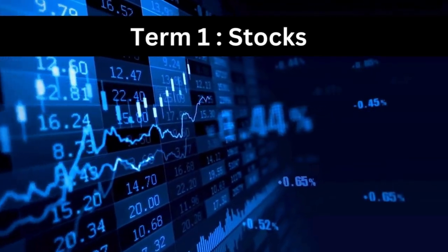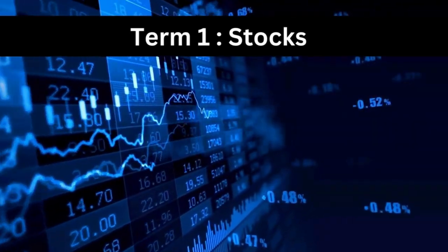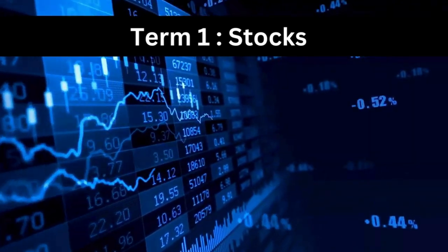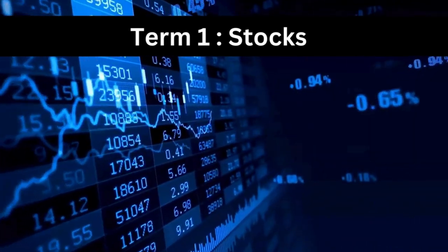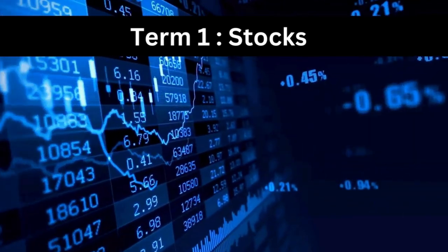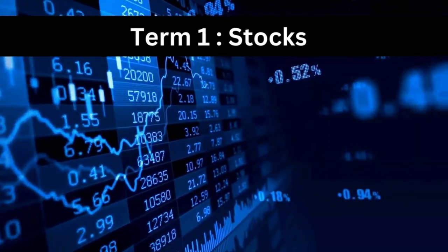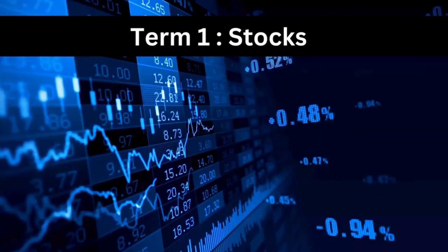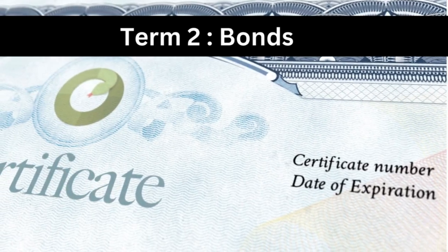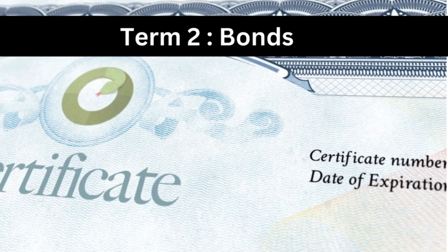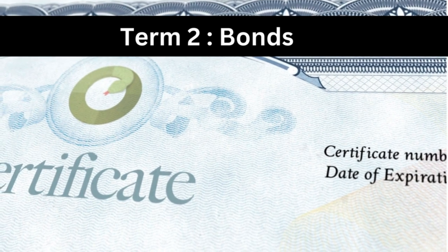Term one: Stocks. Stocks represent ownership in a company. When you buy a stock, you become a shareholder and own part of that company.